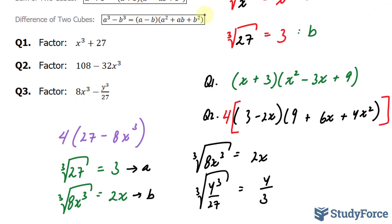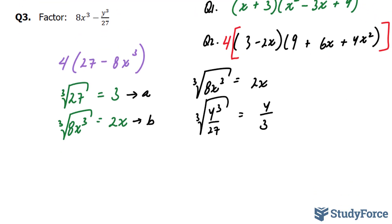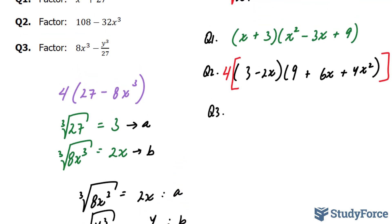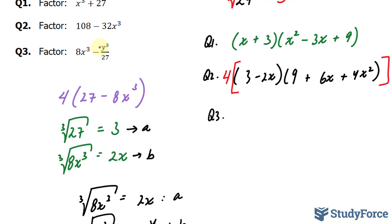And since they are being subtracted, I'll use this template once again. So for question 3, using the template as before, and I'll call this my a, and I'll call this my b. The reason why I'm calling this my b is because that is the negative term.